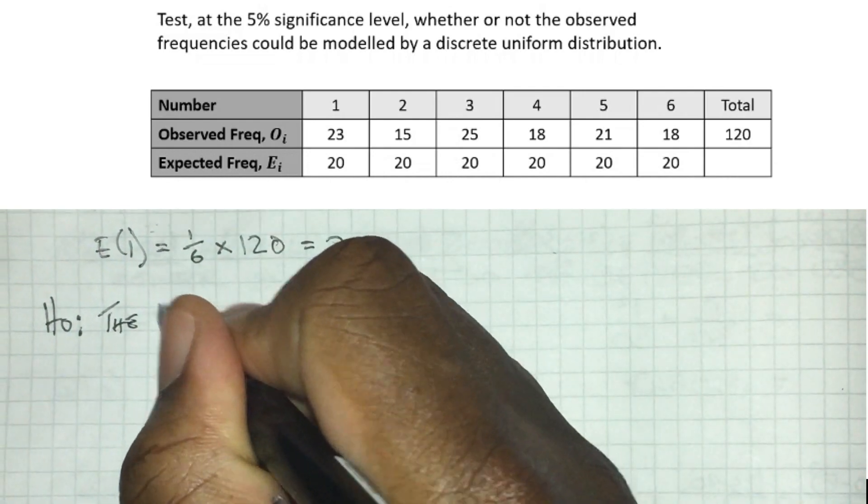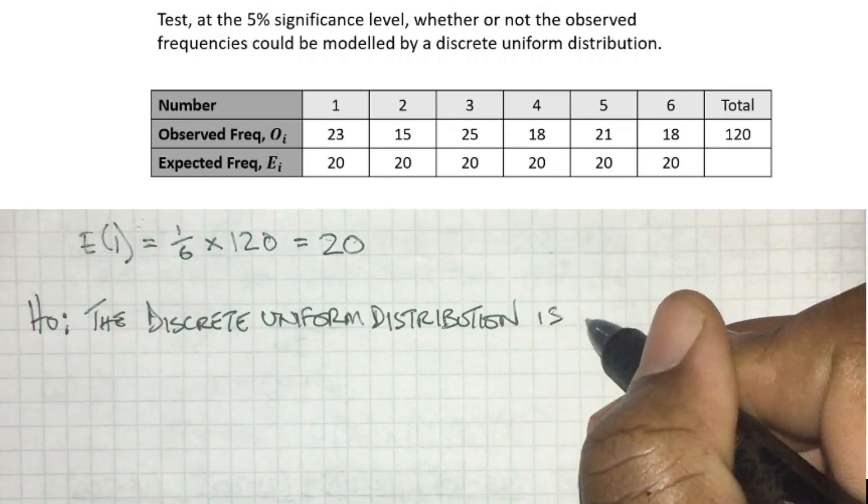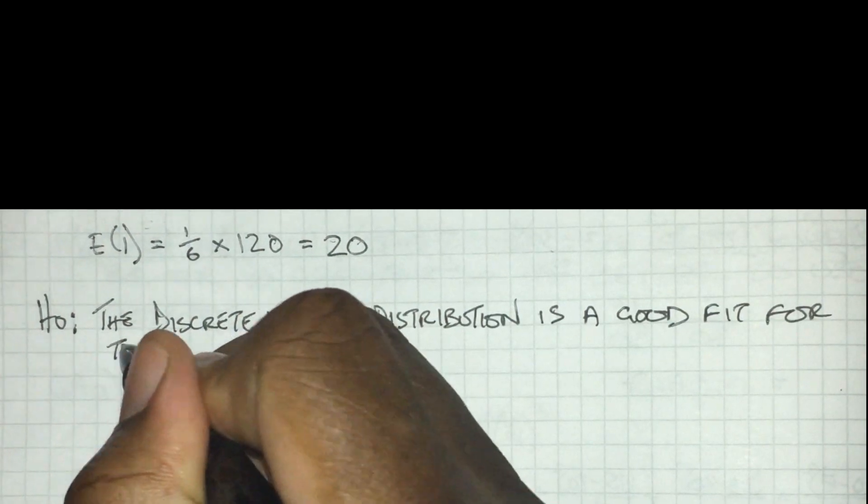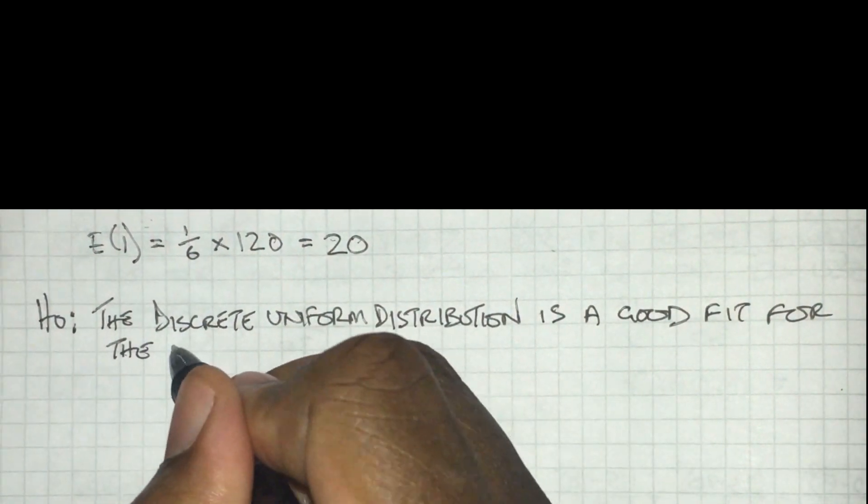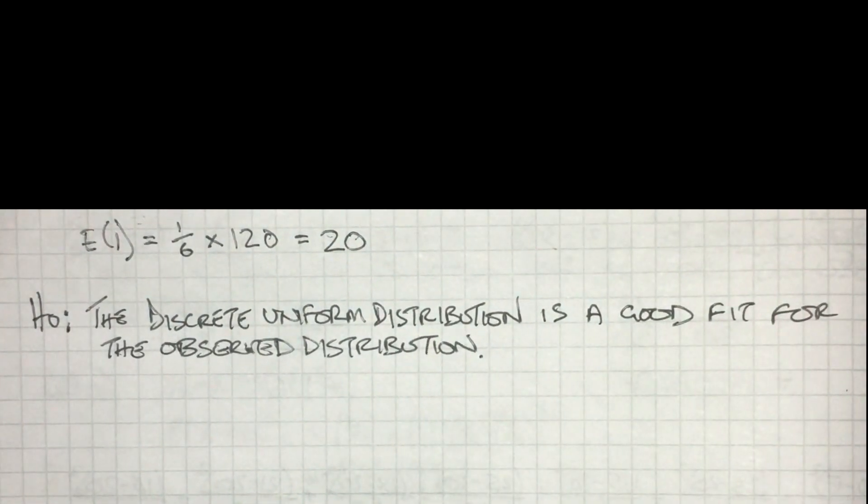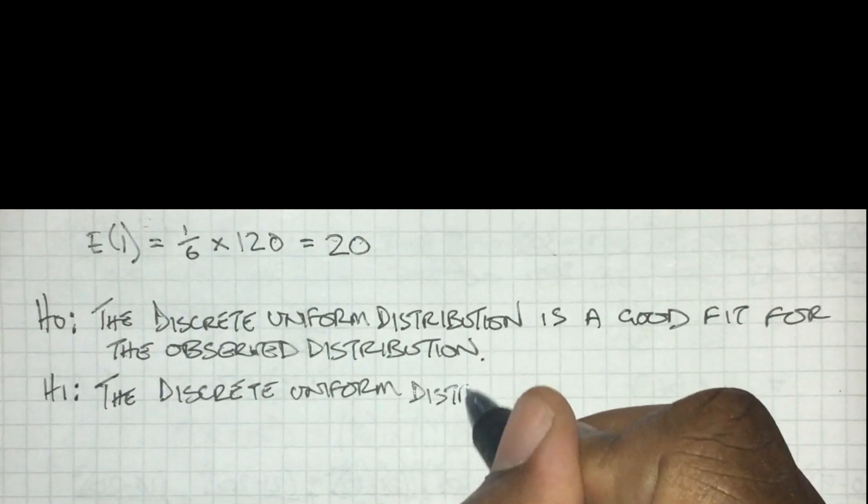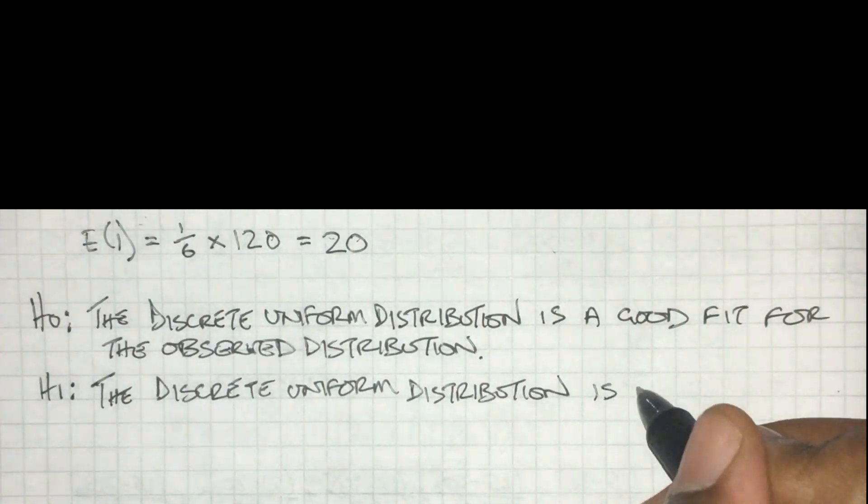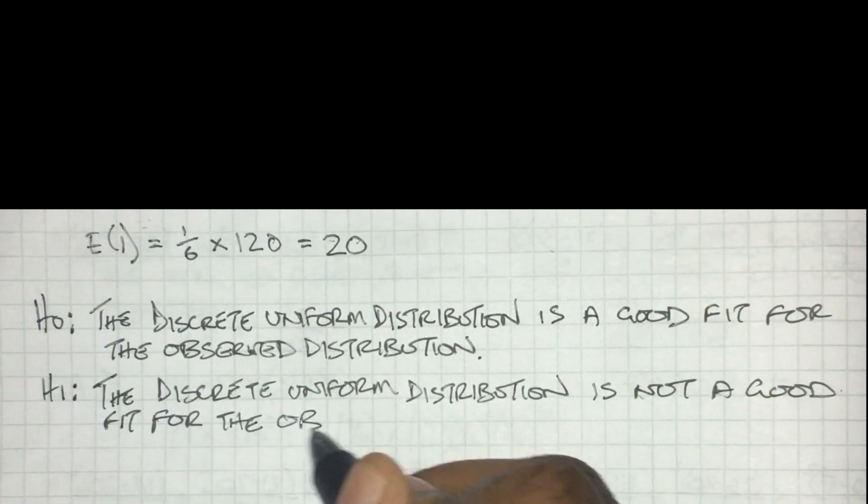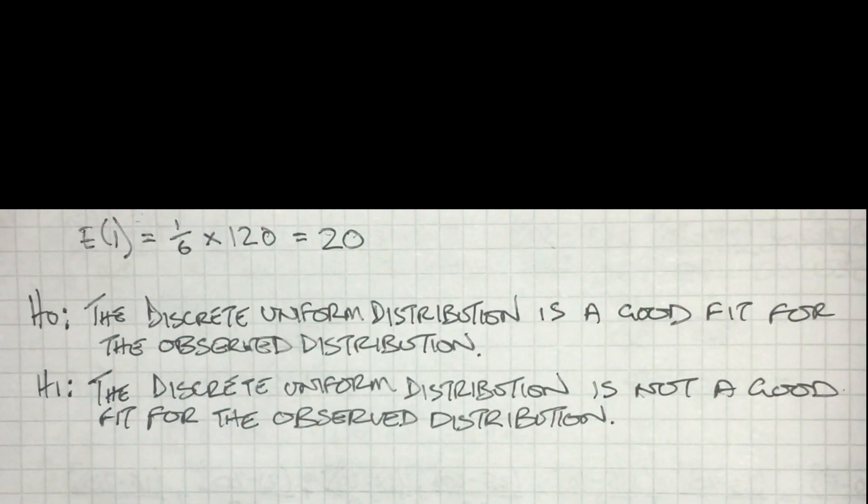The very first thing to do, just like with every hypothesis test, is to state the hypotheses. The null hypothesis is that we have a good fit - the expected values that match a discrete uniform distribution are a good fit for the observed distribution. The alternative hypothesis is that it's not a good fit.